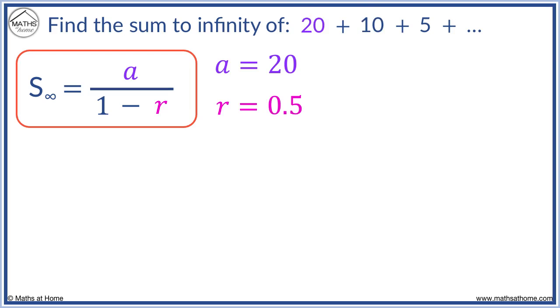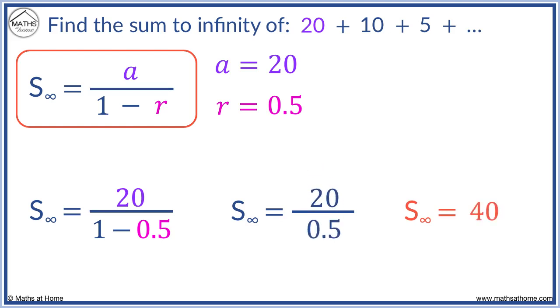r equals 0.5. The sum to infinity equals 20 over 1 minus 0.5. 1 minus 0.5 equals 0.5. We work this out. 20 divided by 0.5 equals 40.